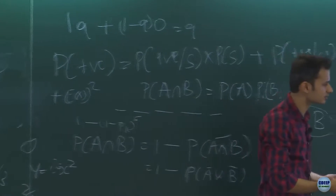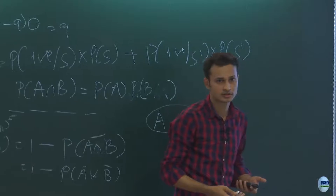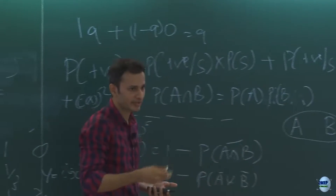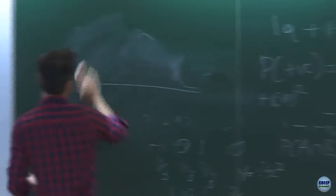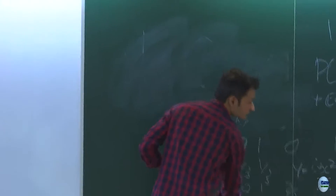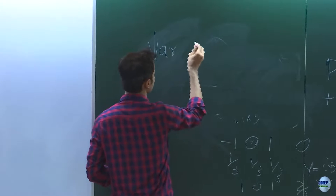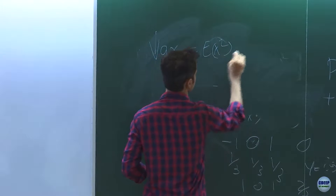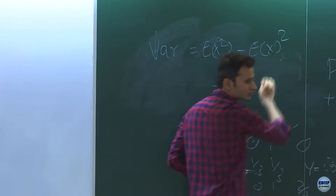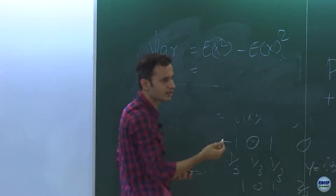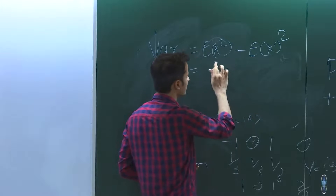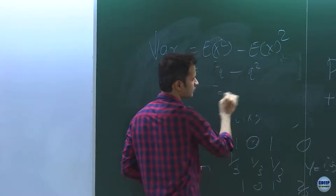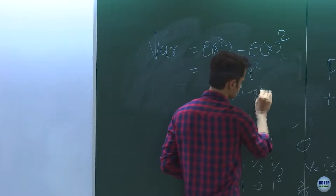Similarly, you can derive the variance. Variance = E[X²] − (E[X])². E[X²] = 1² × q + (1 − q) × 0 = q, so variance = q − q² = q(1 − q).